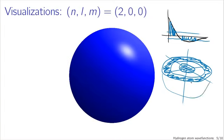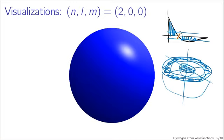These cases where l and m are both equal to zero have spherical symmetry, since the spherical harmonics — the part that gives you dependence on theta and phi — is trivial, it's constant. So for the case of l and m both equal to zero, you just end up with concentric spherical shells where the particle is likely to be found. The number of regions where the particle is unlikely to be found — where the wave function crosses zero — is essentially given by n minus 1.